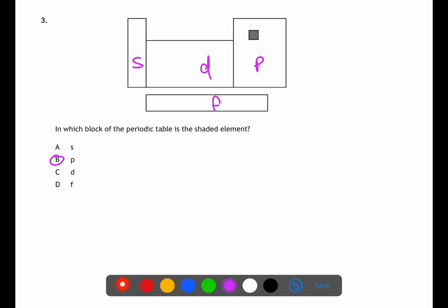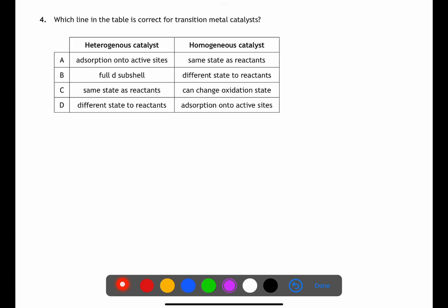Question four is looking at your understanding of catalysis. For a heterogeneous catalyst there is absorption onto active sites. There has to be some sort of unfilled d subshell for this to work and it is in a different state to the reactants. For a homogeneous catalysis it is in the same state as the reactants.